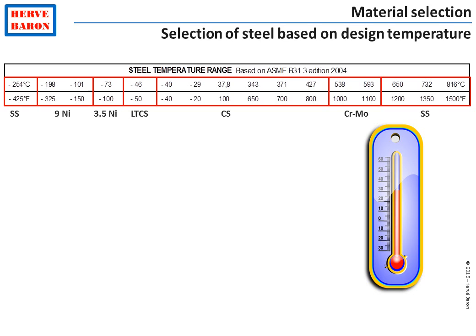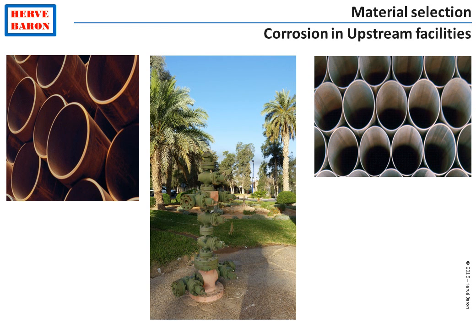The last parameter that influences material selection is the type of fluid and its corrosion aspects. The most common corrosion phenomenon found in upstream oil and gas facilities involves fluids containing gas mixed with oil and water. Water becomes acidic due to the presence of acid gases such as CO2 and H2S, and this acid water corrodes the steel.